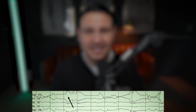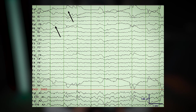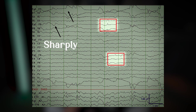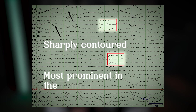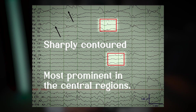The hallmark of REM sleep on the EEG is the presence of sawtooth waves, which are sharply contoured theta waves that are most prominent in the central regions. These waves kind of resemble the teeth of a saw and are a unique marker of this sleep stage.